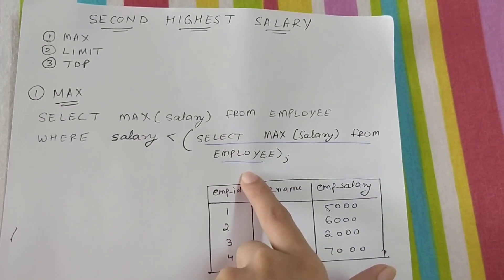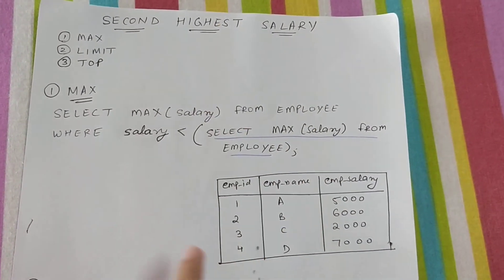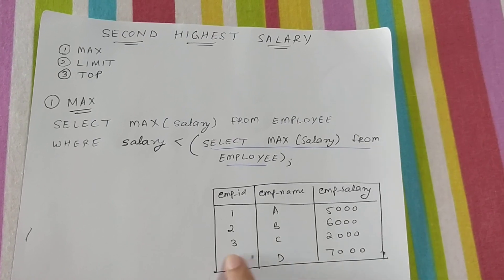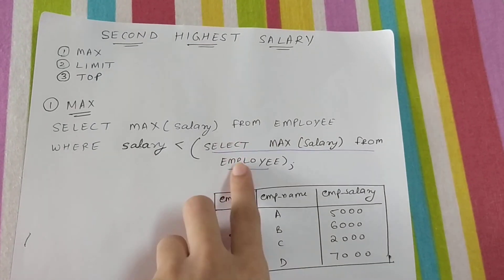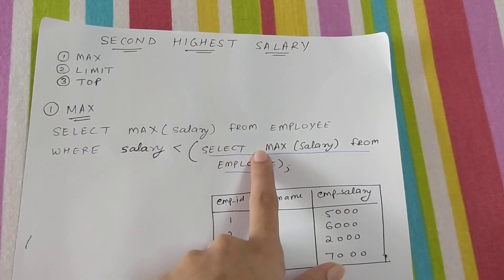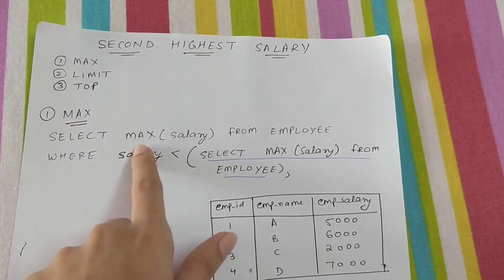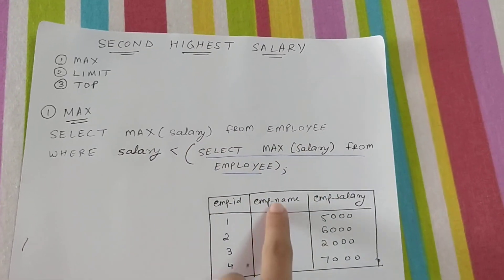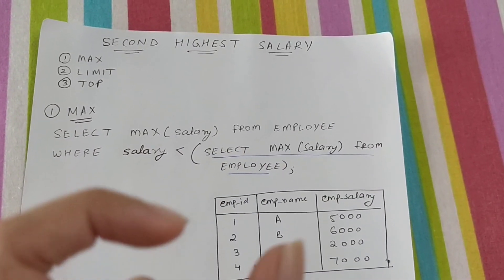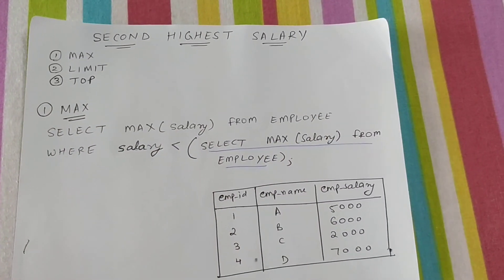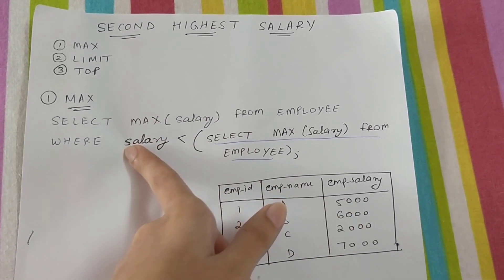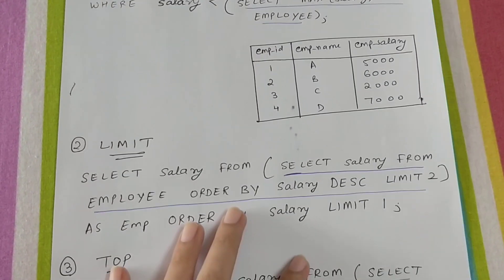The inner query — SELECT MAX(salary) FROM employee — will find the maximum salary, which is 7000, and return that value. Then the outer query runs: SELECT MAX(salary) FROM employee WHERE salary < 7000. So the maximum salary less than 7000 is 6000, and that is our answer. I hope that is clear.